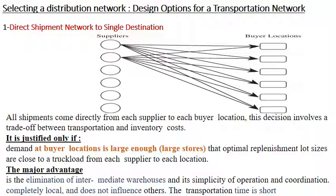The first distribution network design is direct shipments to a single destination. This means each supplier sends shipments directly to each buyer location — one supplier can send to location 1, location 2, location 3, location 4, and so on, separately.